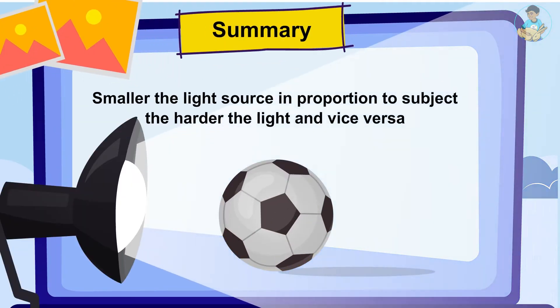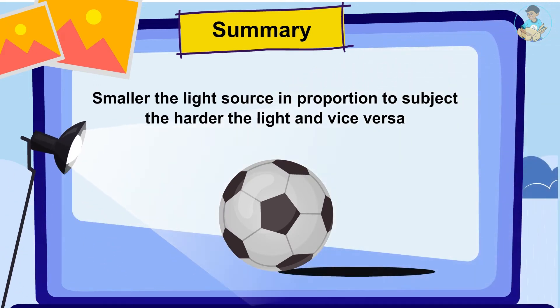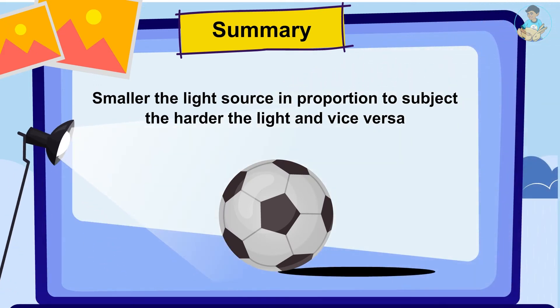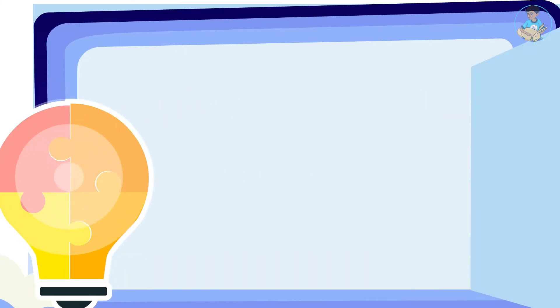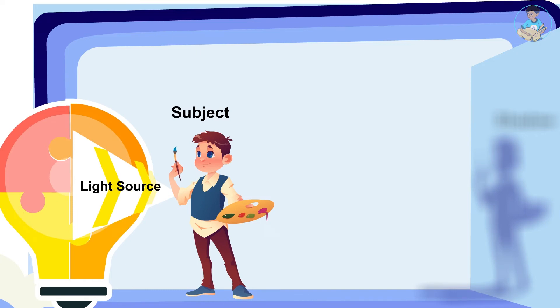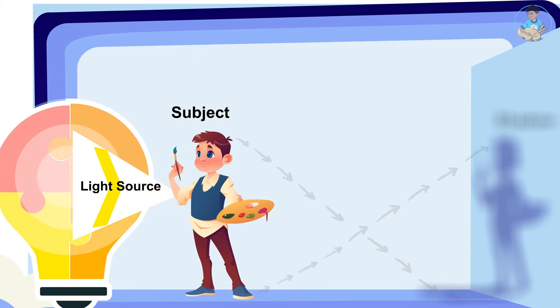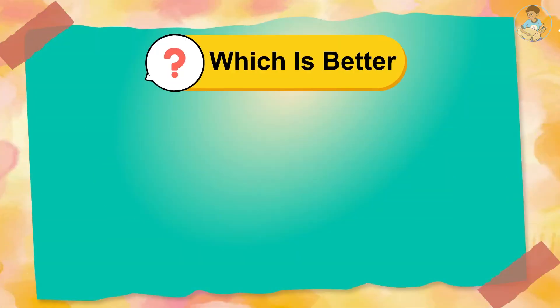To summarize: the smaller the light source in proportion to the photography subject, the harder the light — and vice versa. And the closer the subject is to the light source, the softer the light — and vice versa.